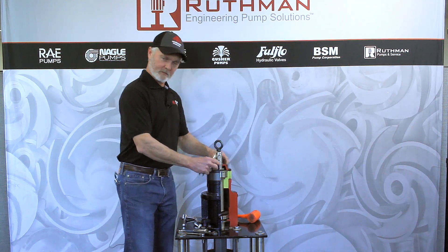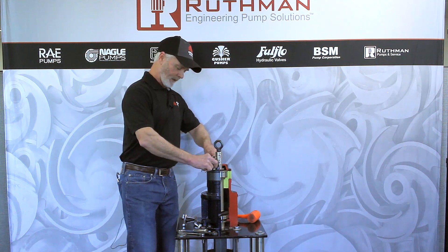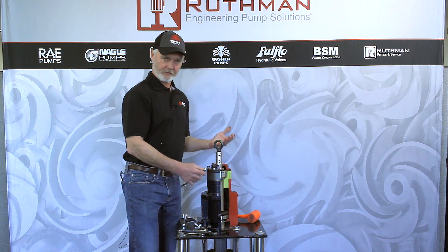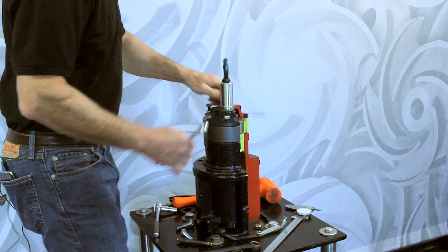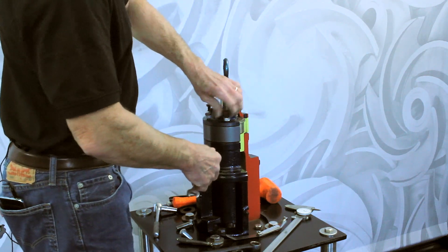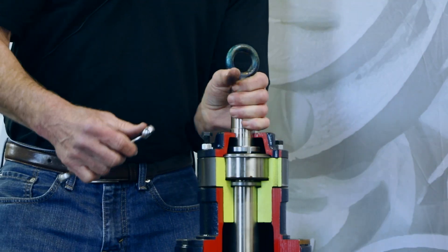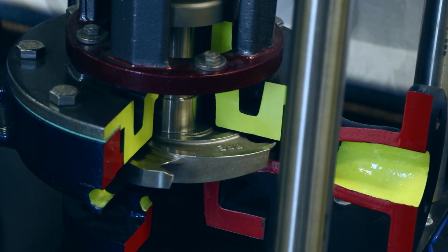Once you've done that, you want to go to the longer bolts. Those will pull the shaft up. To do this, we want to start out with one bolt. Just tighten it until your shaft turns freely. You feel no rub on your housing.